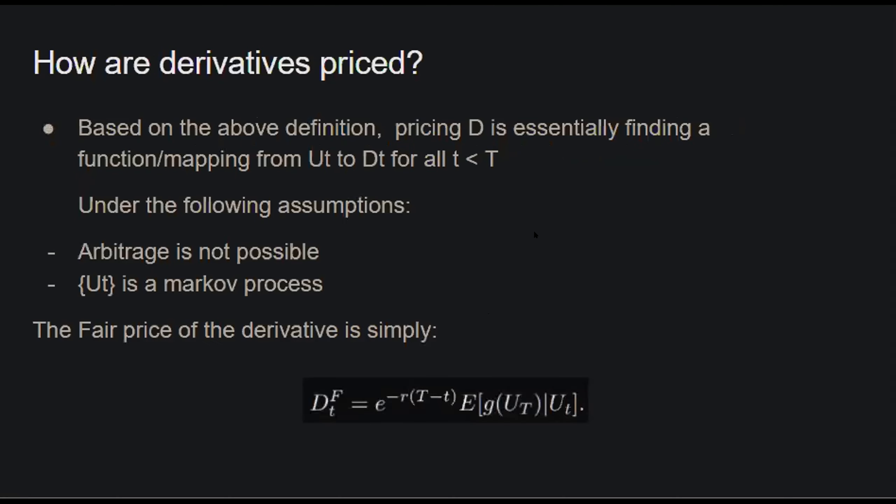So how is the derivative priced? Based on the definition above, pricing the derivative is essentially finding a functional mapping from U(T) to D(T) for all T less than the maturity date.